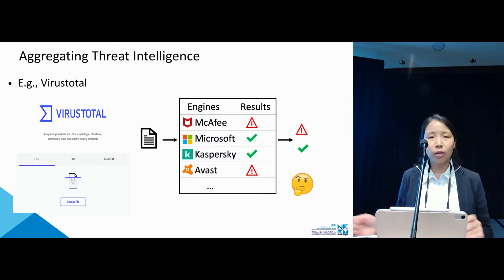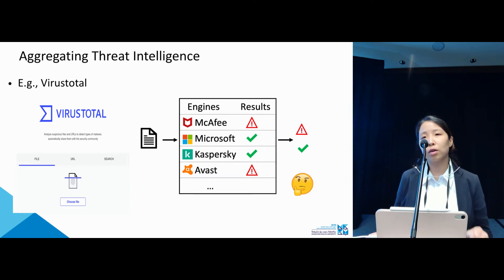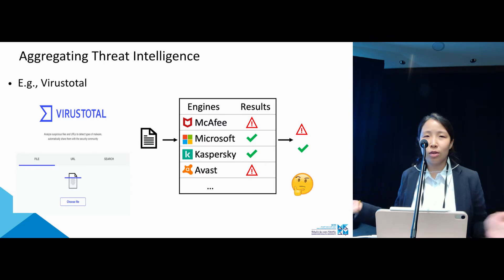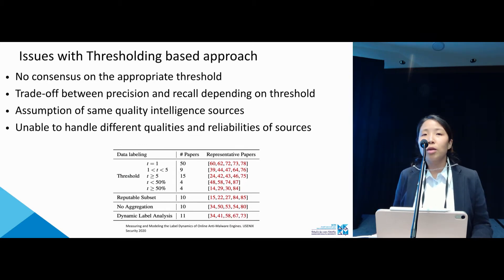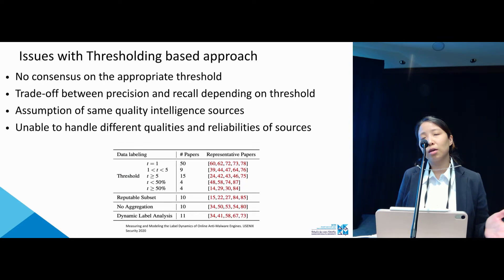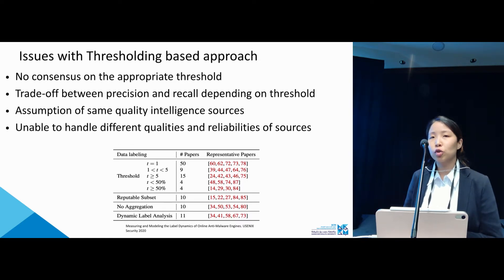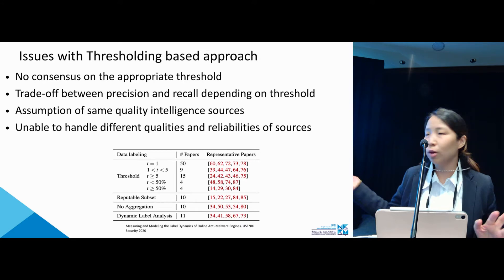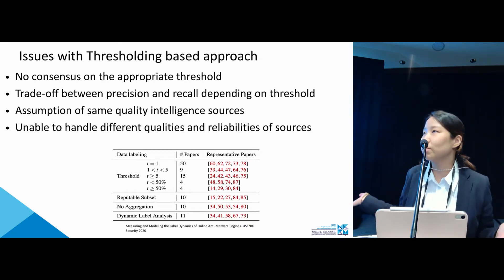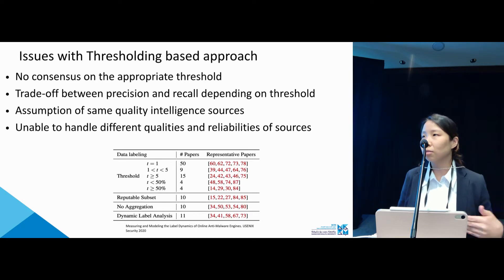So when we have conflicting labels, how can we aggregate this information to give a final judgment? The most common approach to aggregate intelligence sources is the threshold-based approach — if a certain number of scanners detect something, we consider it malicious. In fact, in the literature, arbitrary numbers of thresholds have been used: some papers use one, some use one to five, some use ten. There is no consensus on the appropriate threshold to define maliciousness.